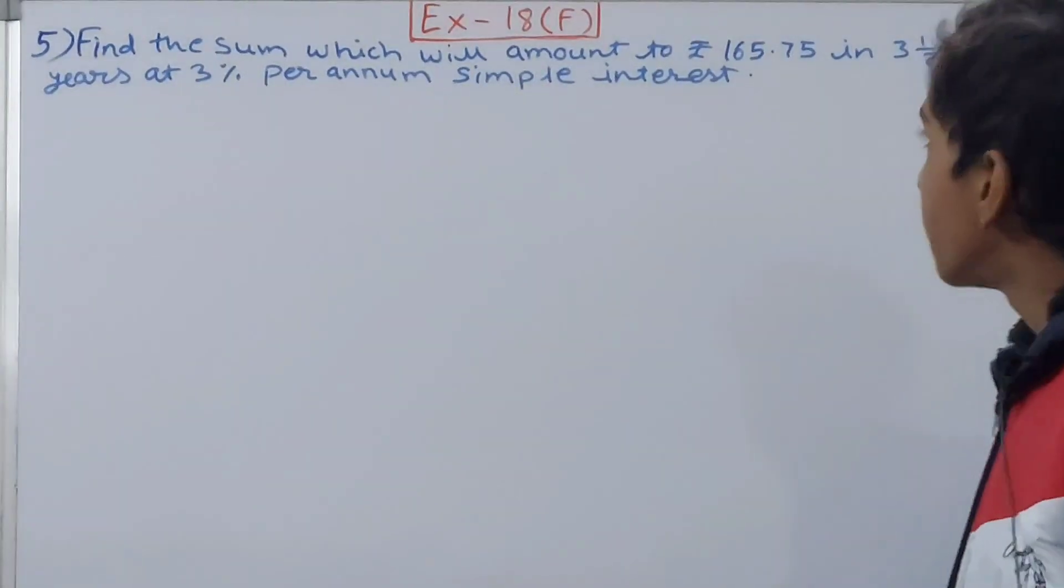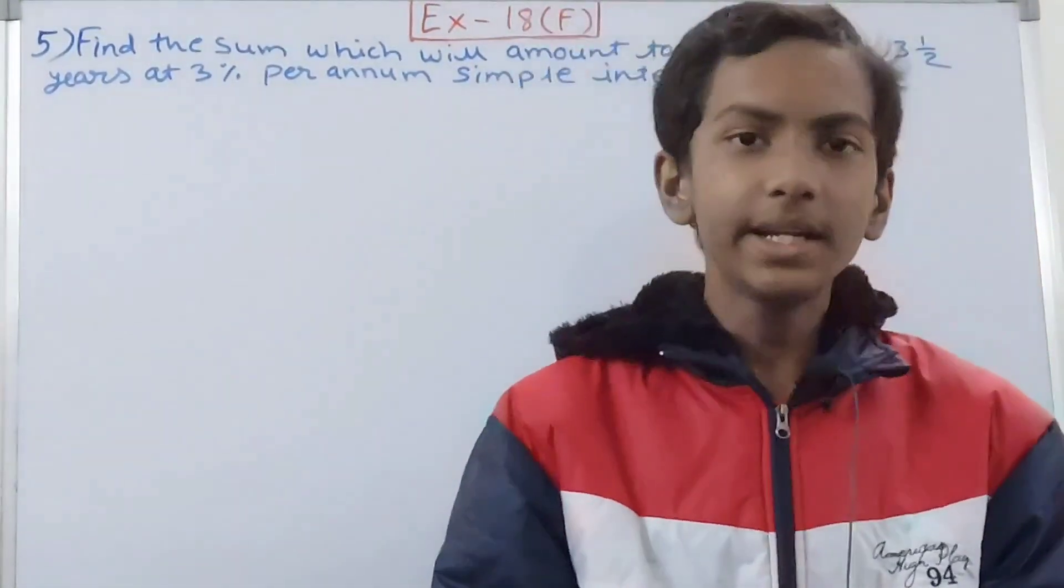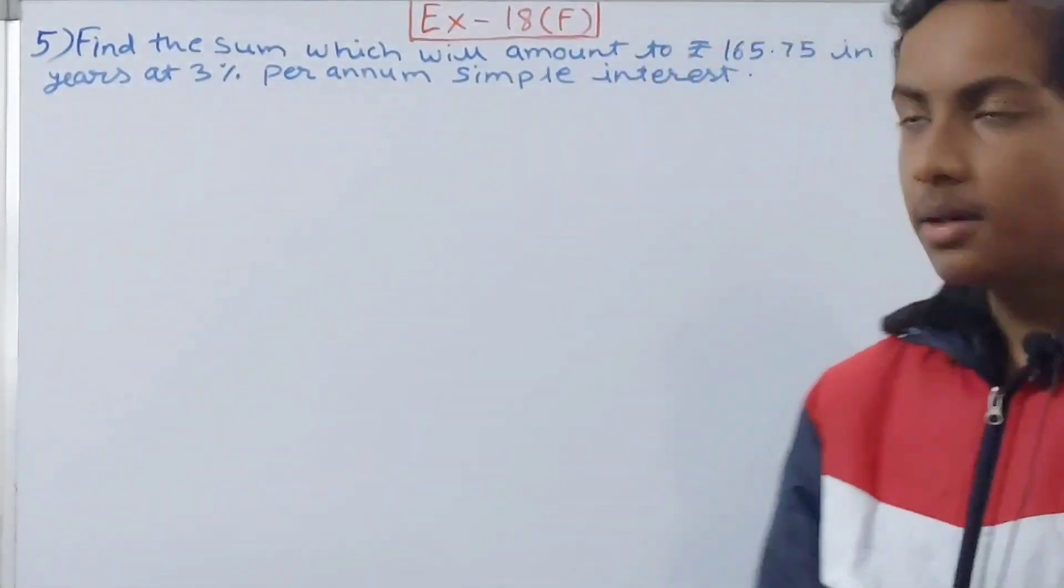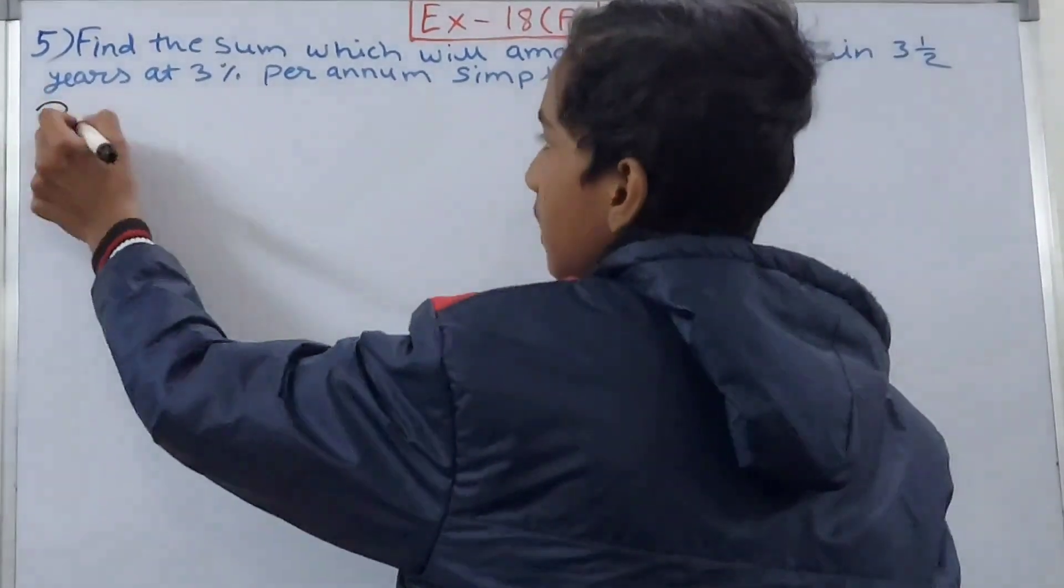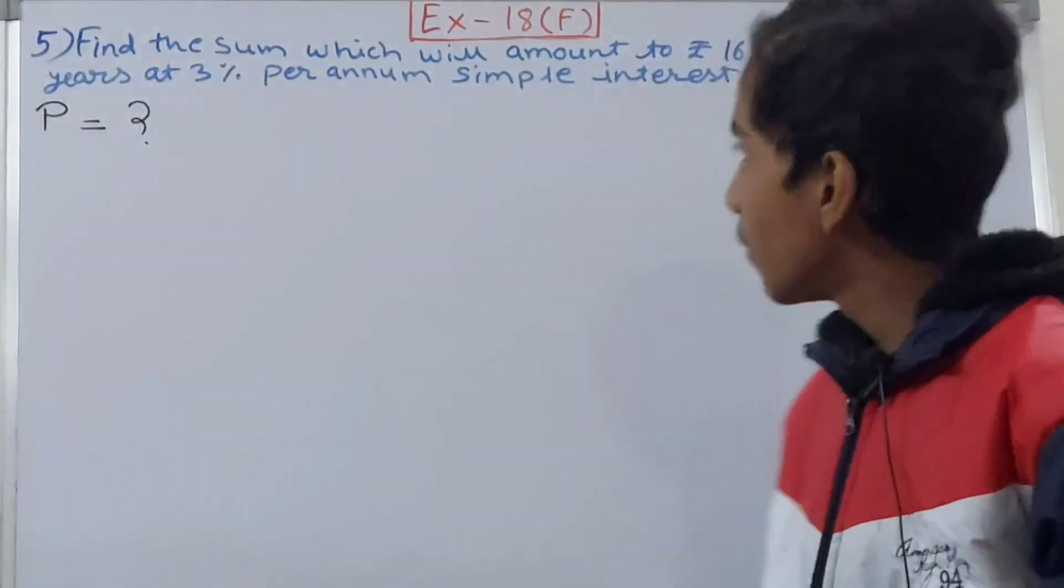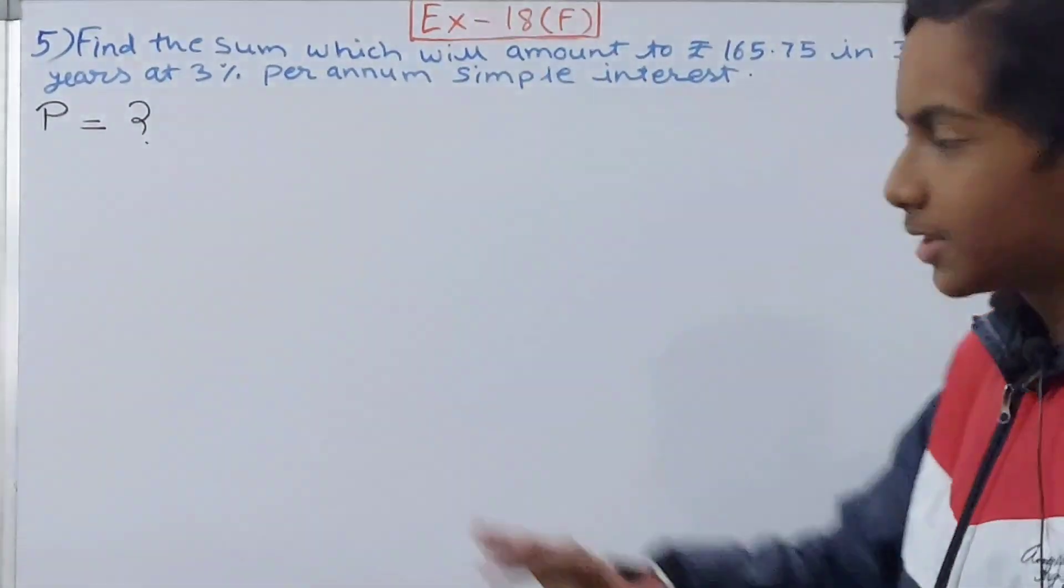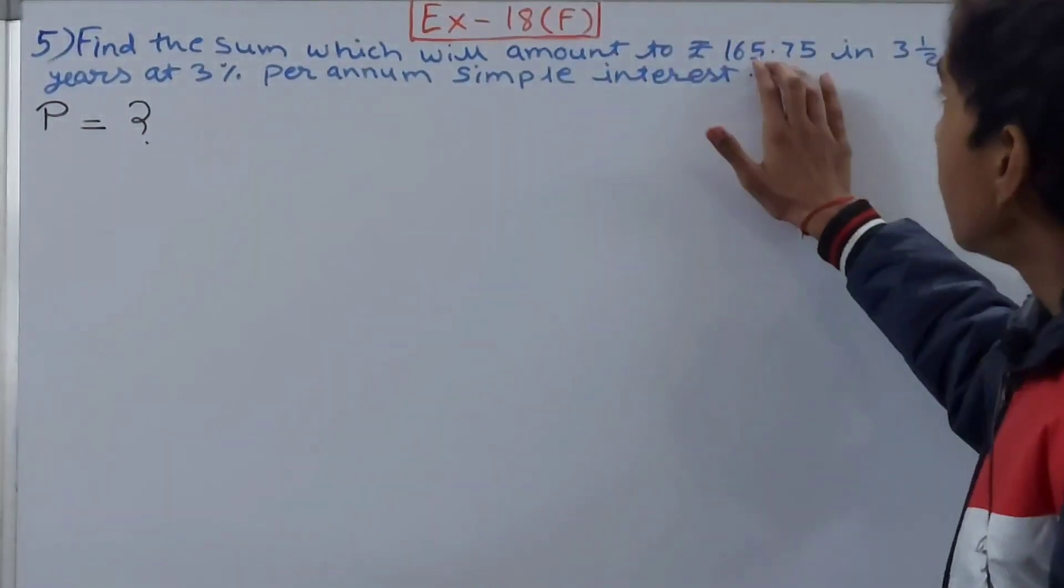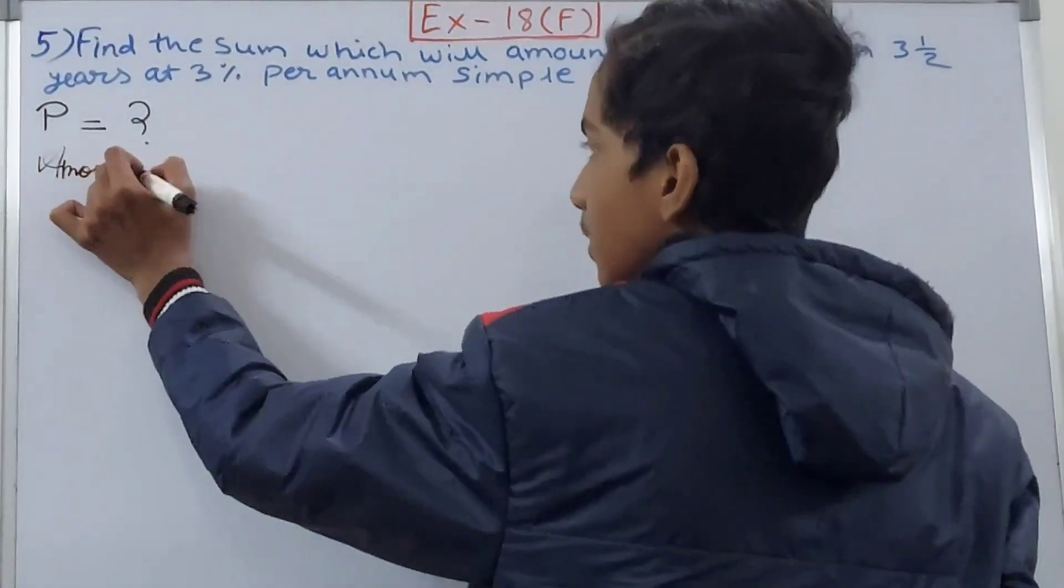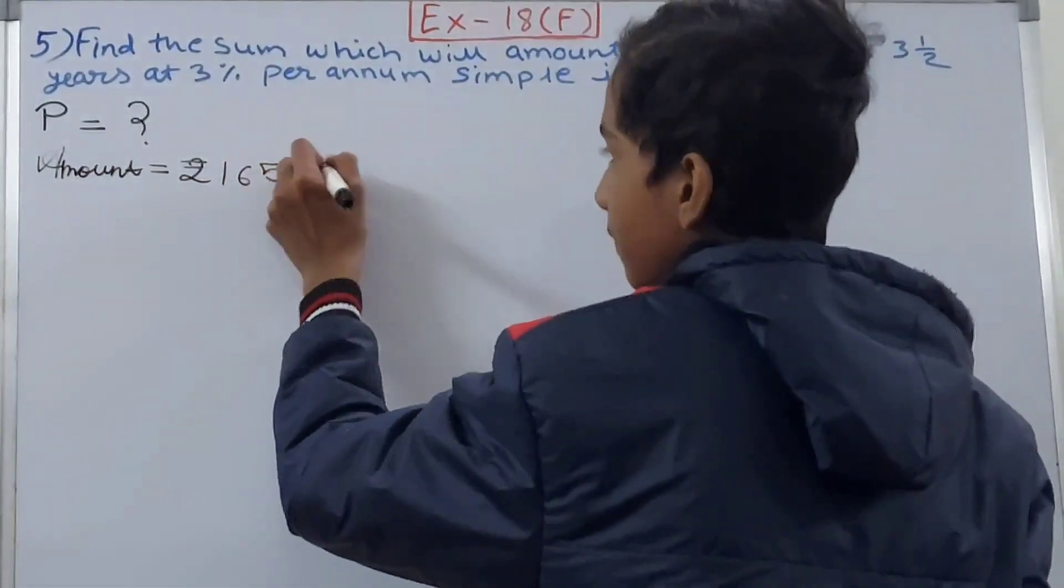What we have to do here is find the sum, or you can say simply the principal. So we need to find the principal, that is P. A few things are given: it will amount to - amount means the amount. So the amount will be Rs 165.75.